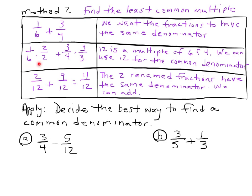So if we have one sixth and three fourths, we want the fractions to have the same denominator. I know that both six and four have the multiple of twelve in common. If I were to multiply six times four, that's twenty-four, but that's a little high. I want the least common multiple — the very first multiple they have in common. I would count six, twelve; and four, eight, twelve — there we are. So one times two is two, six times two is twelve. Three times three is nine, four times three is twelve. Nine plus two is eleven — eleven twelfths. The two renamed fractions, two twelfths and nine twelfths, now have the same denominator and we add them.